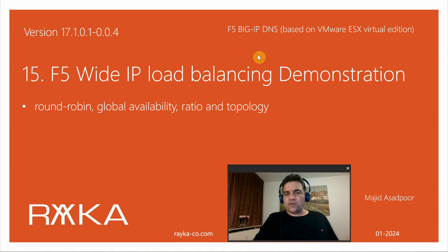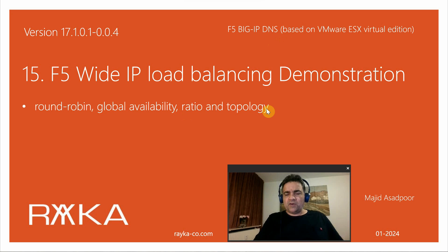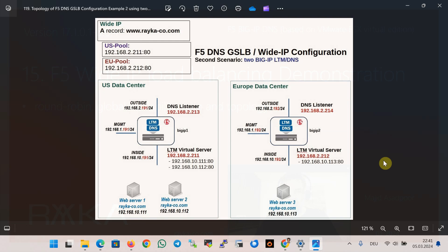Welcome to another video of the course F5 BIG-IP DNS. In the previous section we introduced and discussed various F5 wide IP load balancing algorithms: round robin, global availability, ratio, and topology. We also saw the result of the round robin implementation. In this section we are going to demonstrate the other wide IP load balancing algorithms: global availability, ratio, and topology.